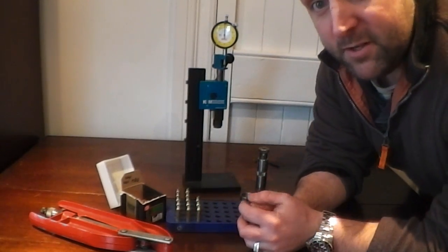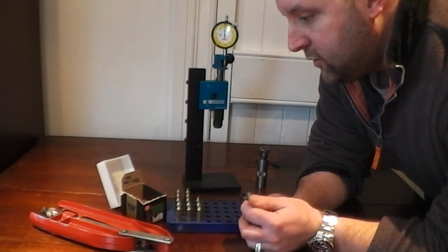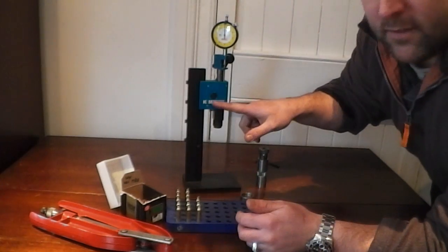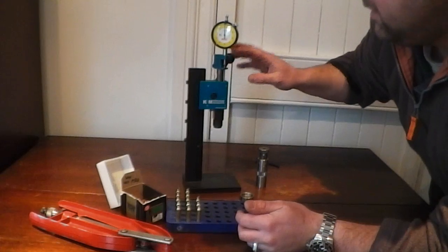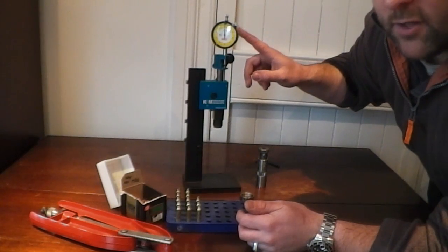Rich Nutting from Sharpshooting UK here to talk about the K&M Arbor press with the force indicator on the top.